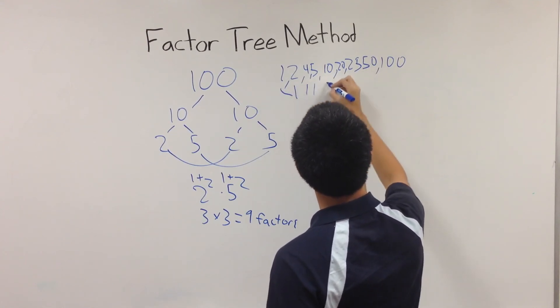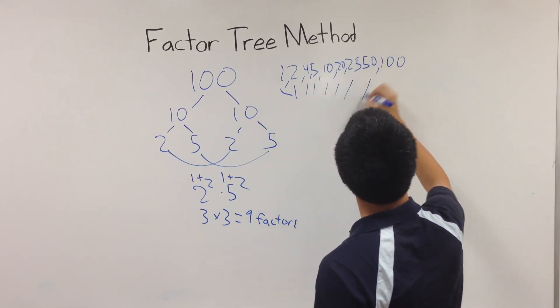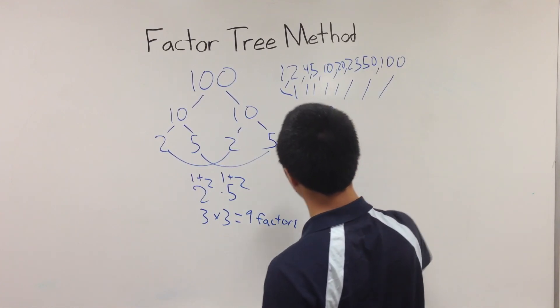1, 2, 3, 4, 5, 6, 7, 8, 9. There are 9 total factors.